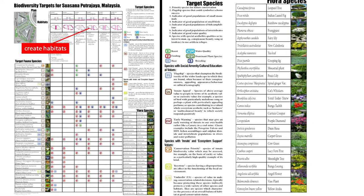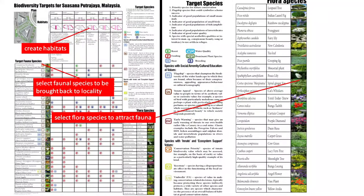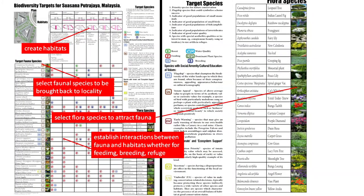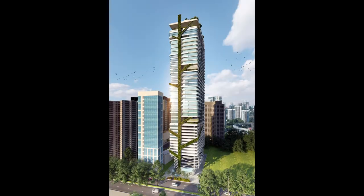Next we identify the native fauna we want to bring back that are not hazardous to human beings, being very careful that these are not invasive species. Then we bring back the flora that will attract the fauna. Having done this, we design how the two interact within the matrix, and we design the landscape conditions for the species to survive over the seasons of the year. In this way, we enhance the biodiversity of the locality.